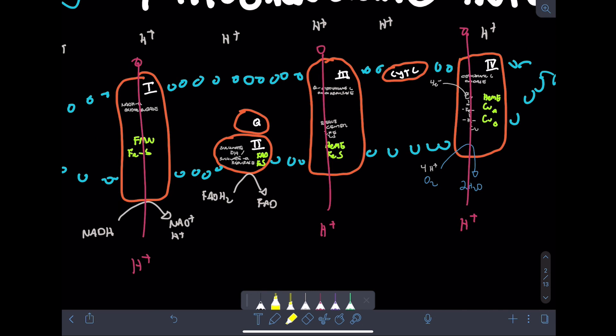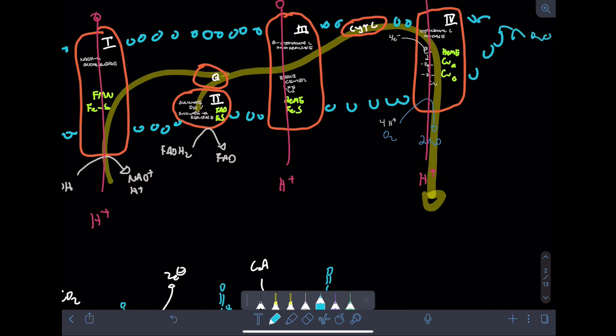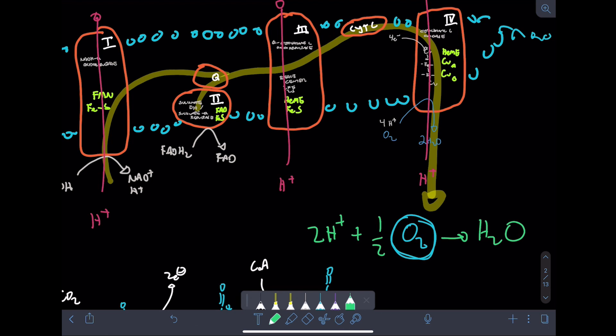And in order for this reaction to occur, these electrons need somewhere to go. And a highly electronegative diatomic molecule like oxygen is the perfect acceptor. So without O2, oxidative phosphorylation and efficient ATP production stop. Okay, that explains why oxygenation is important, but what about ventilation?